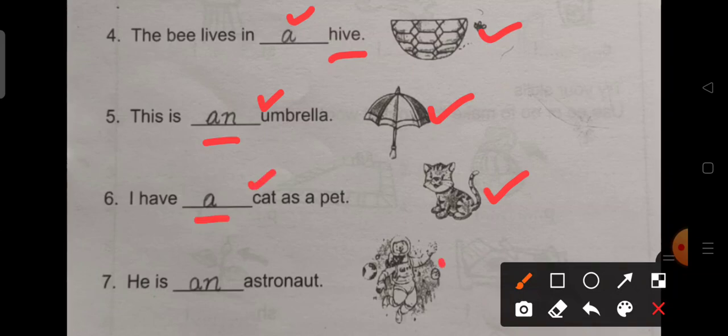Number 7. He is dash astronaut. He is an astronaut. Because the word astronaut begins with a vowel sound.